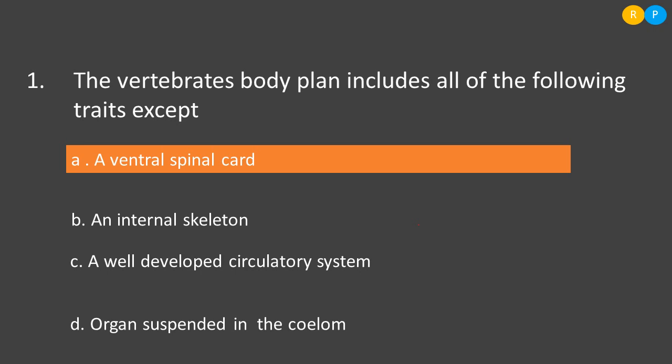Option C is a well-developed circulatory system — the circulatory system in vertebrates is well developed compared to invertebrates, so this is a correct characteristic feature of vertebrates. Option D is organs suspended in the coelom — the coelom is the body cavity region, and in vertebrates most organs are suspended in the coelom. Among the given options, only Option A is not a character observable in vertebrates; B, C, and D are characters of vertebrates. So the correct answer is Option A.